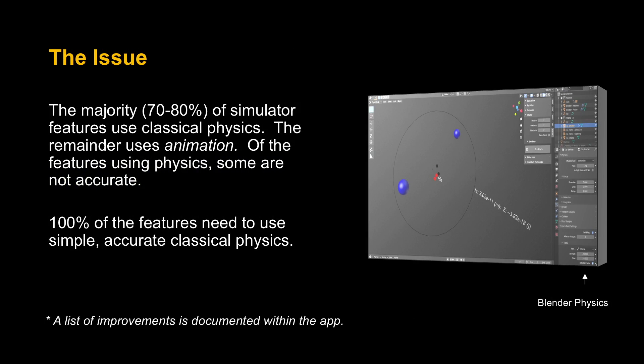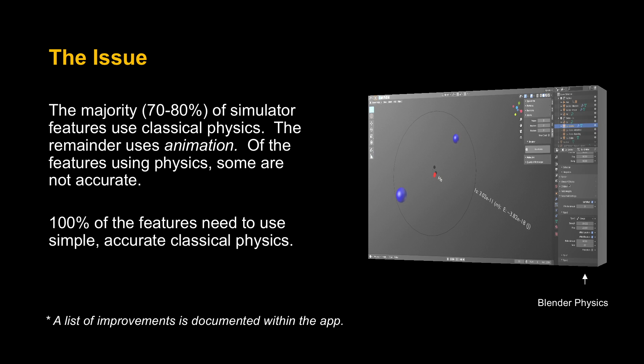What I just showed you is a good start, but it is not proof of the objective. The majority of features do indeed use classical physics, which is the stated objective of the project. As an add-on to Blender, it's able to use the physics engine within this popular 3D creation suite. But the physics engine is incomplete, and so some of the features rely on animation, and even some that use physics are not quite accurate. This is not sufficient proof that the universe operates under one set of laws. And so to fully prove the hypothesis and the stated objective, all, so meaning 100%, of the features need to use simple, accurate classical physics.